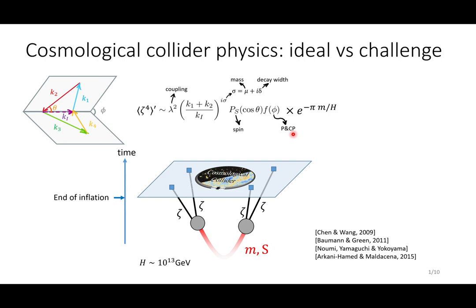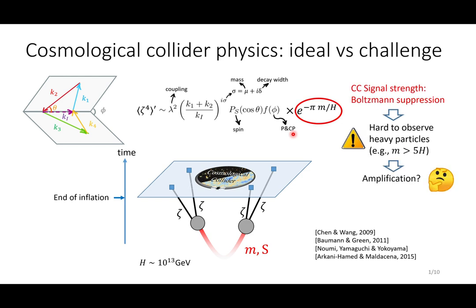However, one challenge of this paradigm is that the signal-to-noise ratio of this cosmological collider's physics signals is suppressed exponentially by the mass of the intermediate particle. This Boltzmann suppression makes these CC signals very hard to observe, especially for heavy particles, for example, if the mass is greater than 5H. So this is a major challenge of this paradigm, which motivates the need for amplifying those CC signals.